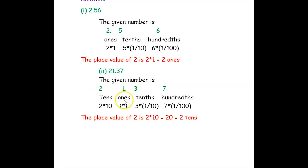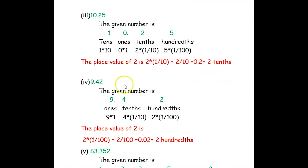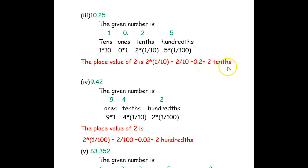The next number is 10.25. The digit 2 is in the decimal part, which is the tenths place. So 2 × (1/10). The place value of 2 is 2 × (1/10), that is 2/10, which equals 0.2. We express it as 2 tenths.